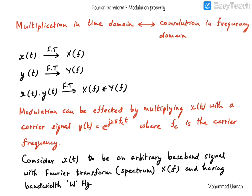In this video, we will discuss a property of the Fourier transform, which is that multiplication of two signals in the time domain corresponds to the convolution of their Fourier transforms in the frequency domain. This property can be applied to understand the modulation property of the Fourier transform as well. By modulation, we mean transforming a baseband signal into a bandpass signal — that is, producing frequency translation in a signal. We will discuss more on that later.